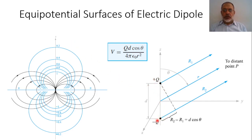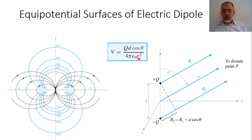The potential due to an electric dipole. An electric dipole is composed of two equal charges, positive Q and negative Q, separated by distance d. The potential due to this configuration at any point r is given by V equals Q multiplied by d cosine theta over 4 pi epsilon r squared. The potential at theta equal 90 degrees, where theta is the angle from the z-axis, is zero.